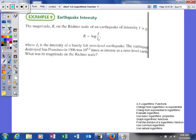Looking at the next example, it says the magnitude R on the Richter scale of an earthquake of intensity I is given as R equals log of I over I sub 0, where I sub 0 is the intensity of a barely felt zero level earthquake. The earthquake that destroyed San Francisco was 10 to the 8.3 times the intensity of the zero level earthquake magnitude on the Richter scale. So we'll see if we can't set up our nice little problem here.